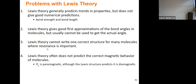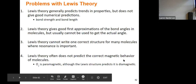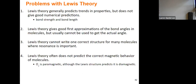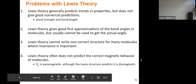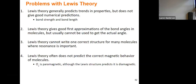We can't use Lewis theory to write one correct structure for a molecule that has resonance structures. The final issue is magnetic behavior — Lewis structure doesn't deal with the fact that, for example, oxygen exhibits paramagnetic behavior, but if we draw the Lewis structure for oxygen we would assume it was diamagnetic. So we have to correct for some of these issues by looking further into valence bond theory and then molecular orbital theory.